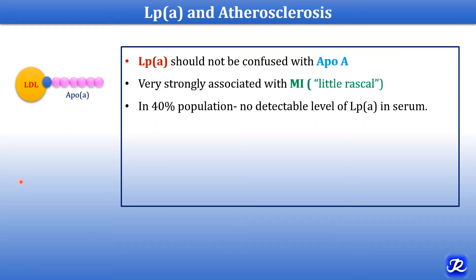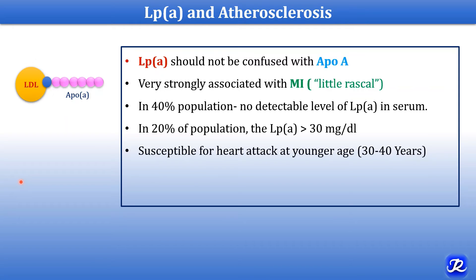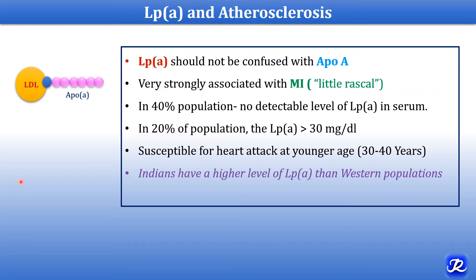In 40% of the population, no detectable levels of lipoprotein(a) are seen in serum, but in 20% of the population it is more than 30 mg/dL. The presence of lipoprotein(a) makes the younger generation more susceptible to heart attacks — heart attacks occurring between ages 30 to 40 are associated with increased lipoprotein(a) levels. Indians have higher levels of lipoprotein(a) than the western population, and nicotinic acid reduces serum lipoprotein(a) levels.